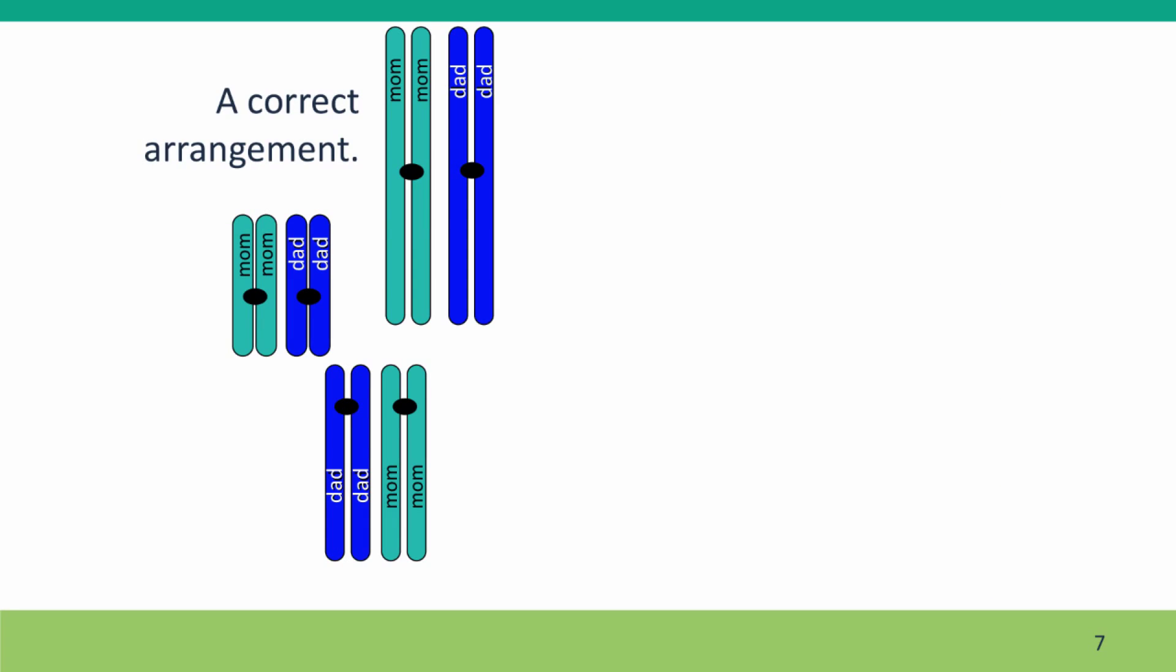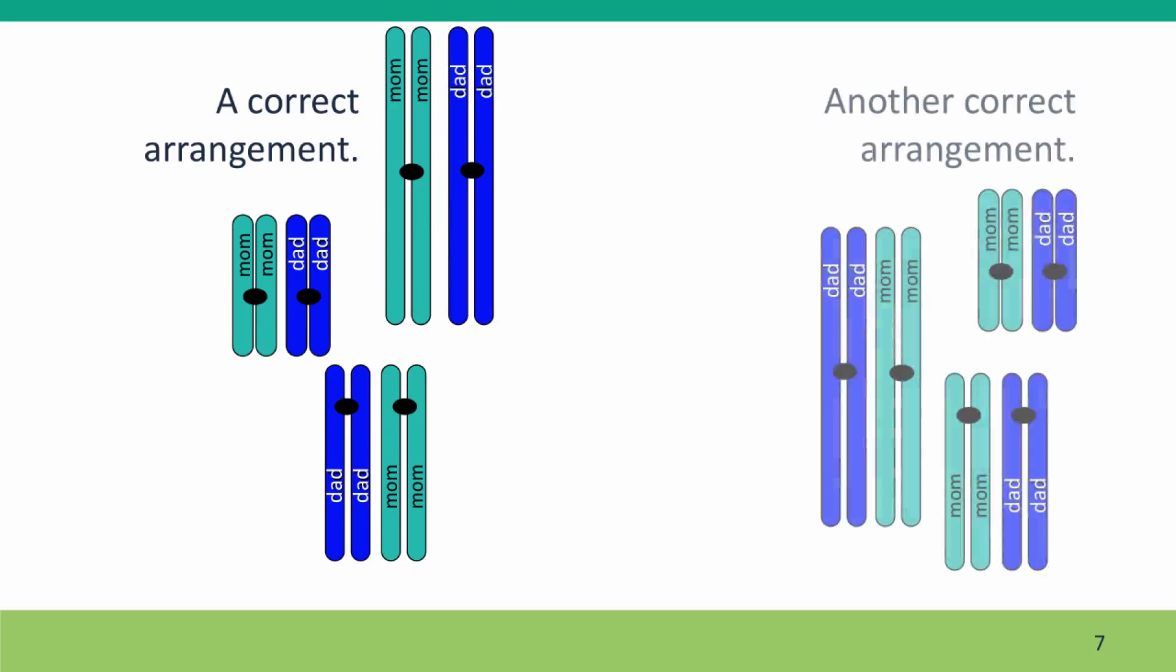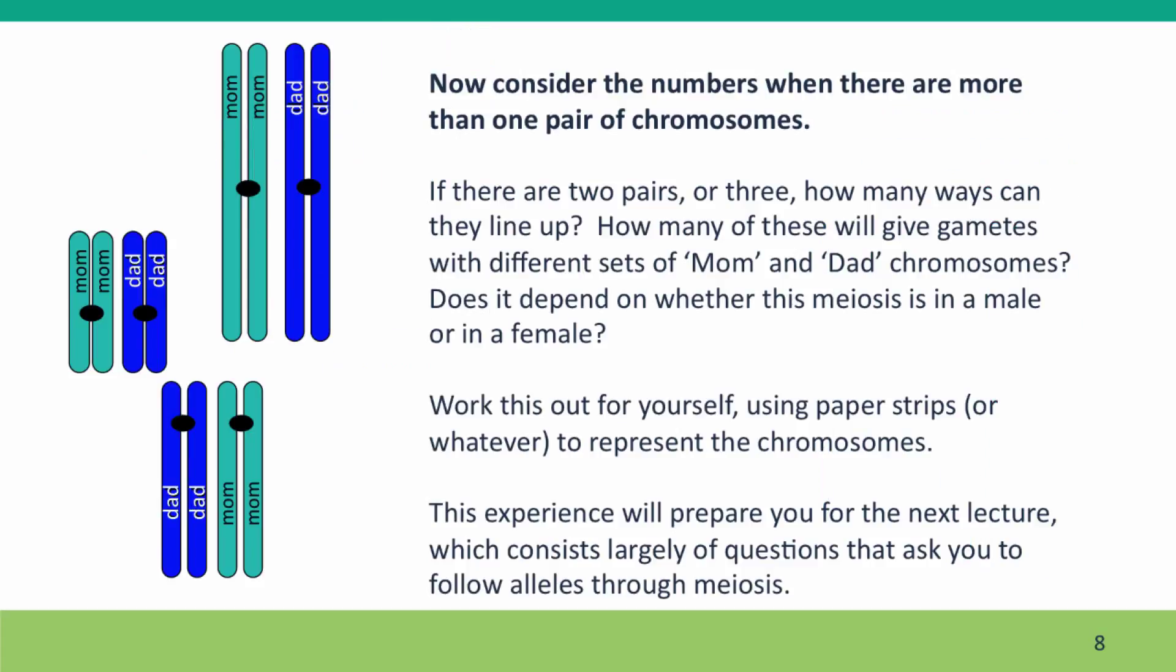So I hope that demonstration helped you see why there are multiple correct arrangements when there are more than one chromosome. The last thing I want you to think about is, how many correct or possible arrangements are there?